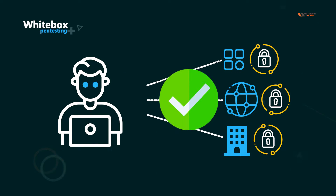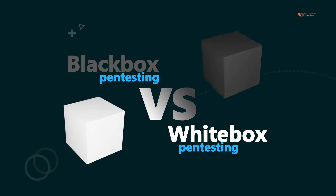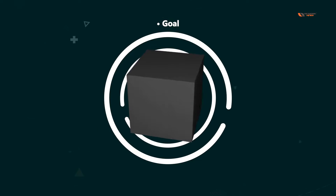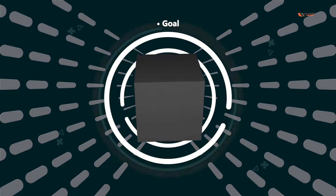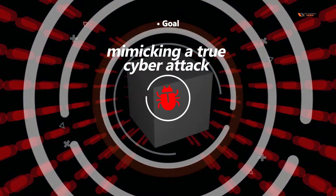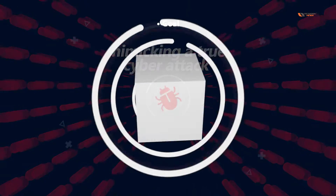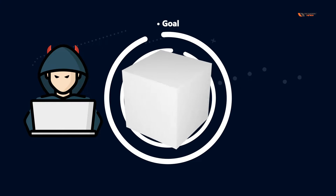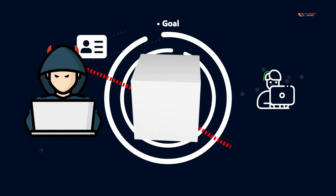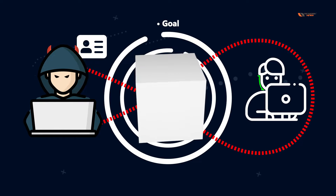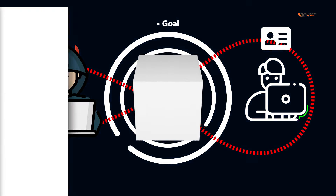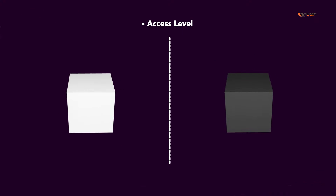Let's point out some more differences between the two. In terms of goal, black box pen testing's goal is to mimic a true cyber attack, whereas for white box pen testing we assume that the attacker has already gained access to a privileged account — for example, they are mimicking or impersonating an administrator.